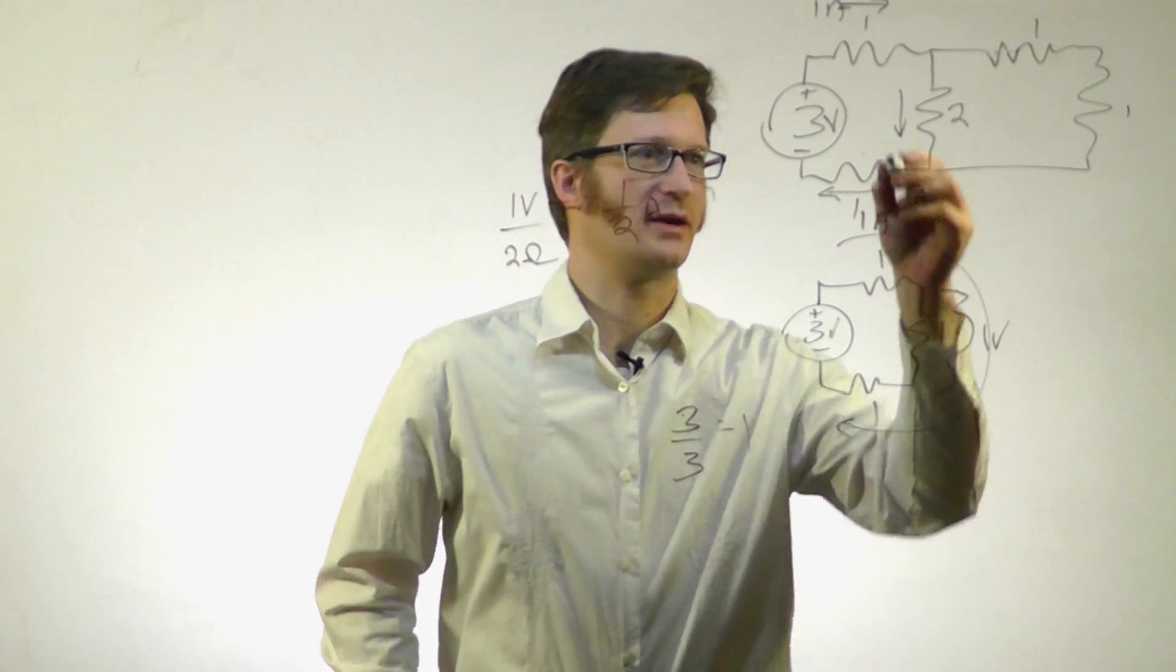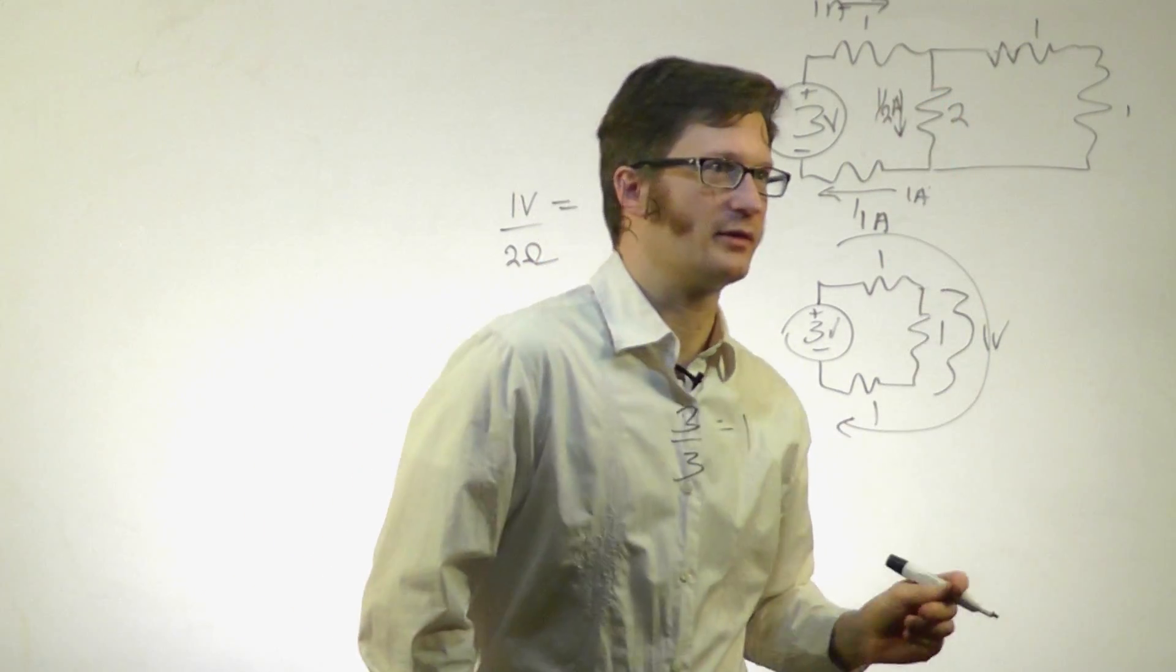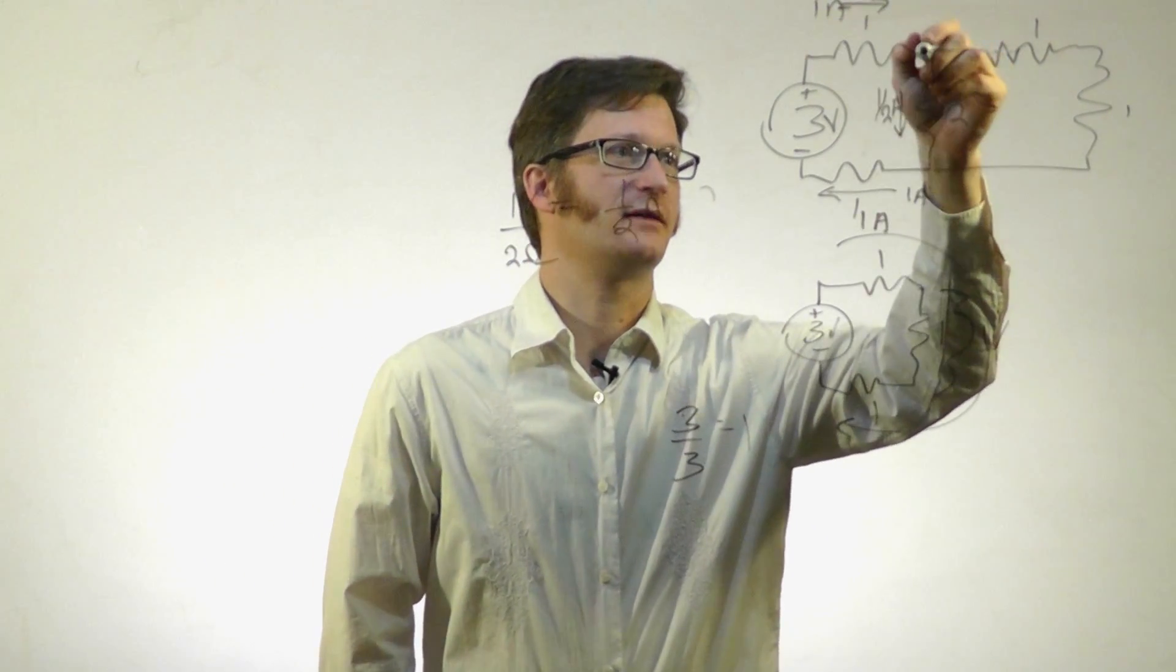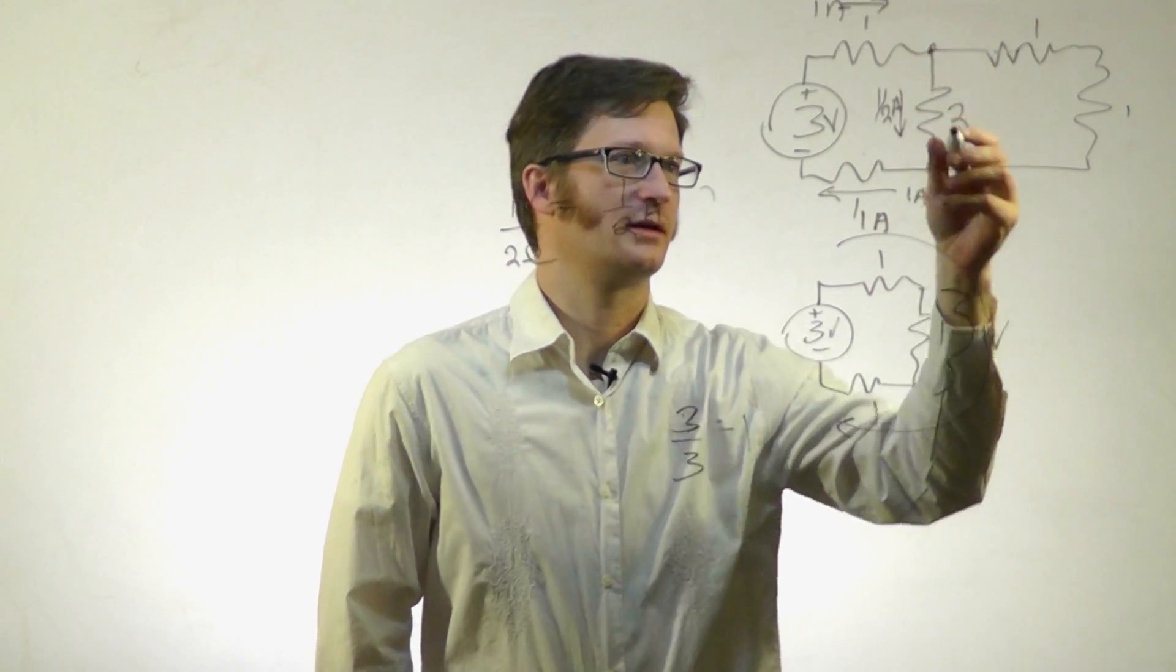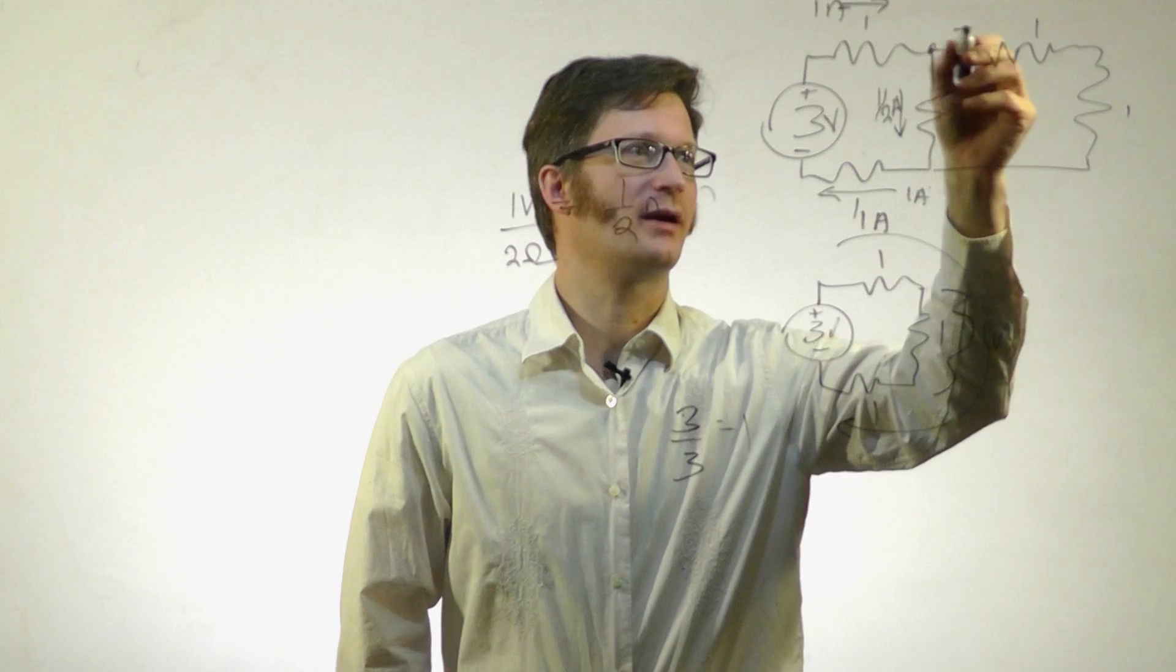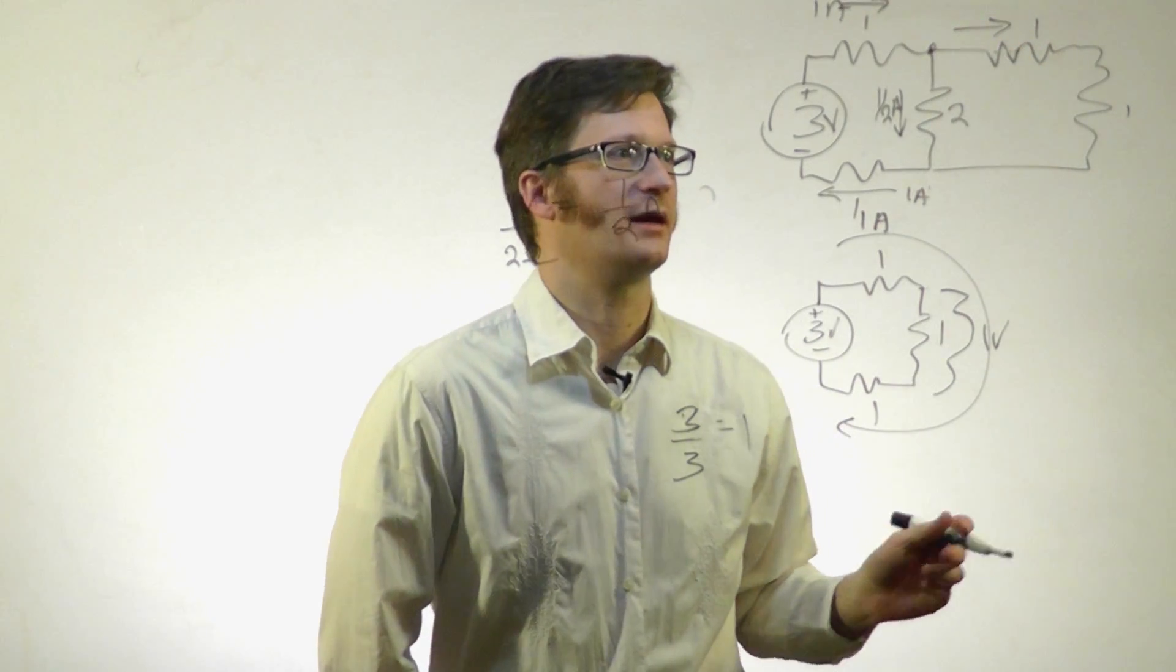We know we have 1/2 amp going through there. Since we have 1 amp going into this node right here and 1/2 going down there, then there must be 1/2 of an amp going through here.